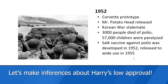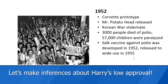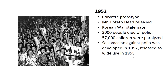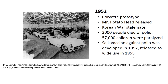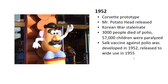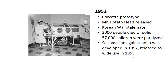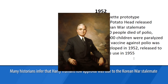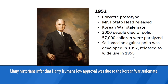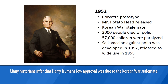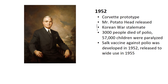So what happened back then? June 1945 was near the end of World War II, so we would expect a very high approval rating. In 1952, the Corvette prototype was put out, Mr. Potato Head was released, but more importantly, the Korean War was fought to a stalemate. Around 3,000 people in the United States died of polio and 57,000 children were paralyzed. Although Jonas Salk invented the vaccine against polio in 1952, it wasn't released to wide use until 1955. Many historians think that Harry Truman's low approval rating was due to the Korean War stalemate.